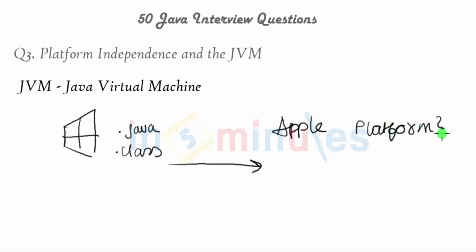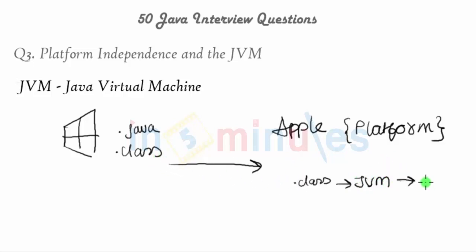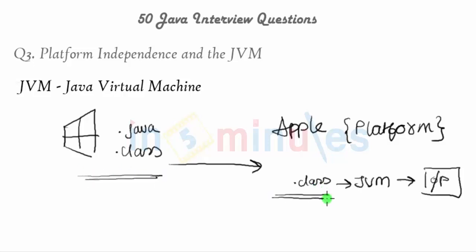We then transfer the .class file to the Apple platform and try to execute it there. The JVM resident on that platform will consume the .class file and run the program, producing the output. So a .class file generated on one platform was executed on a different platform — this is platform independence — and the key component responsible for this is the JVM.